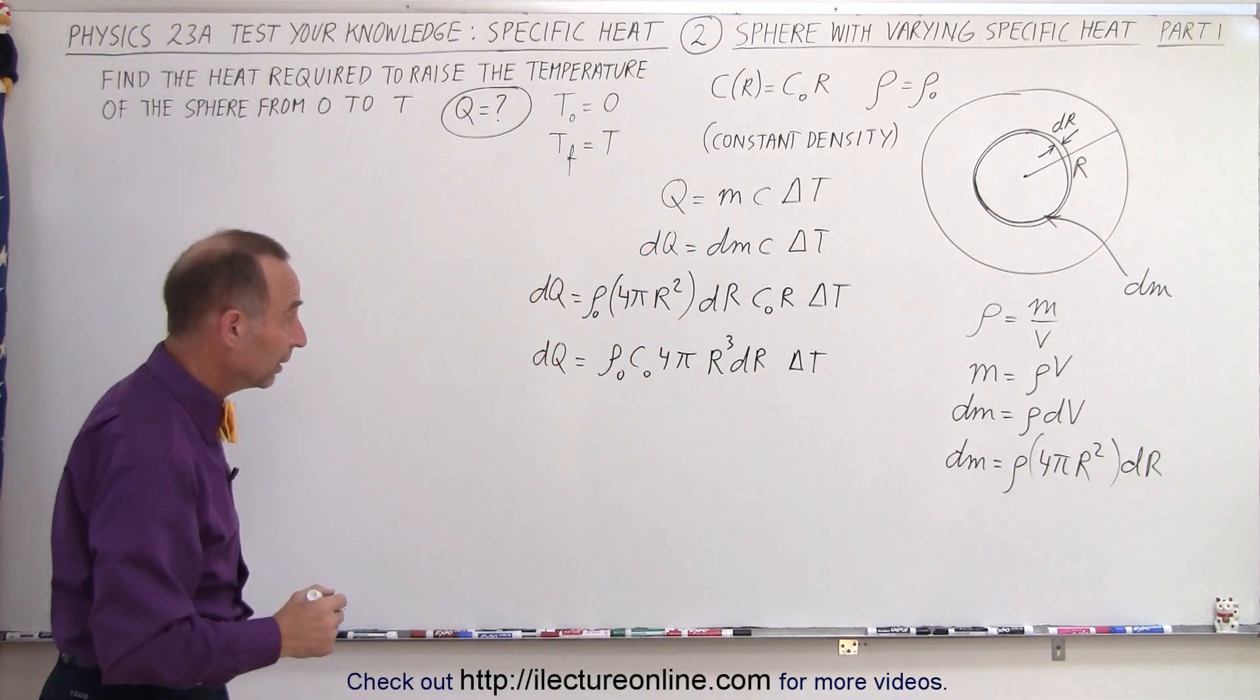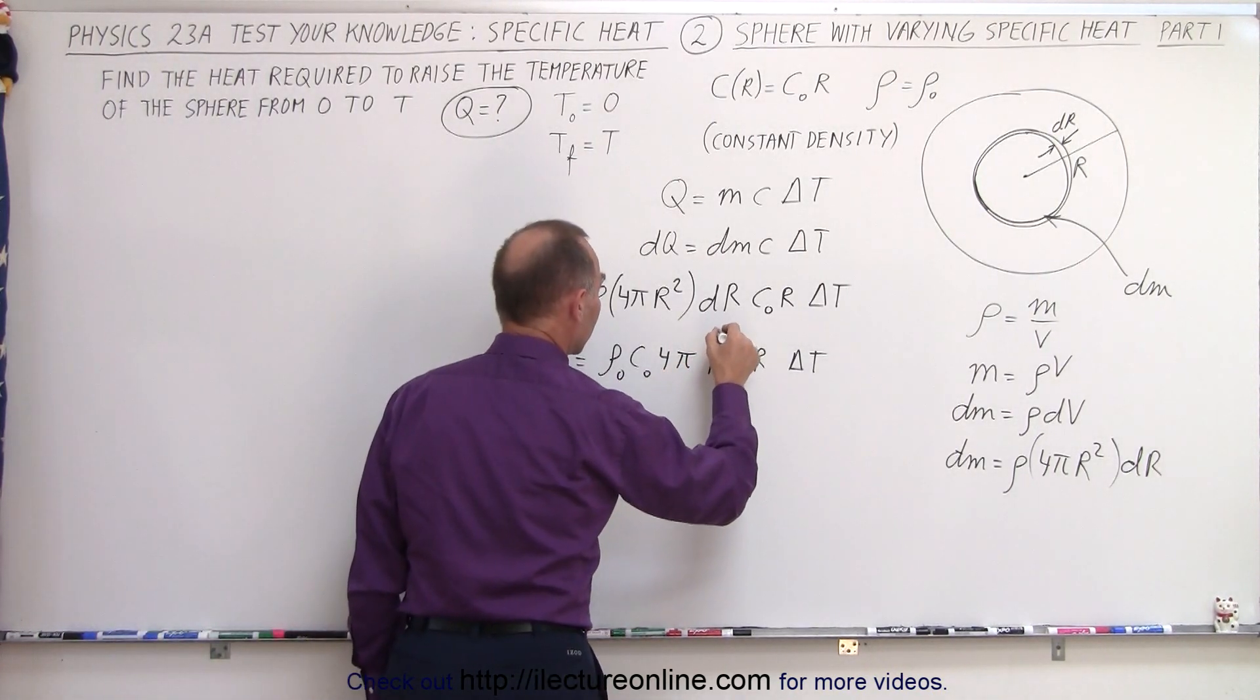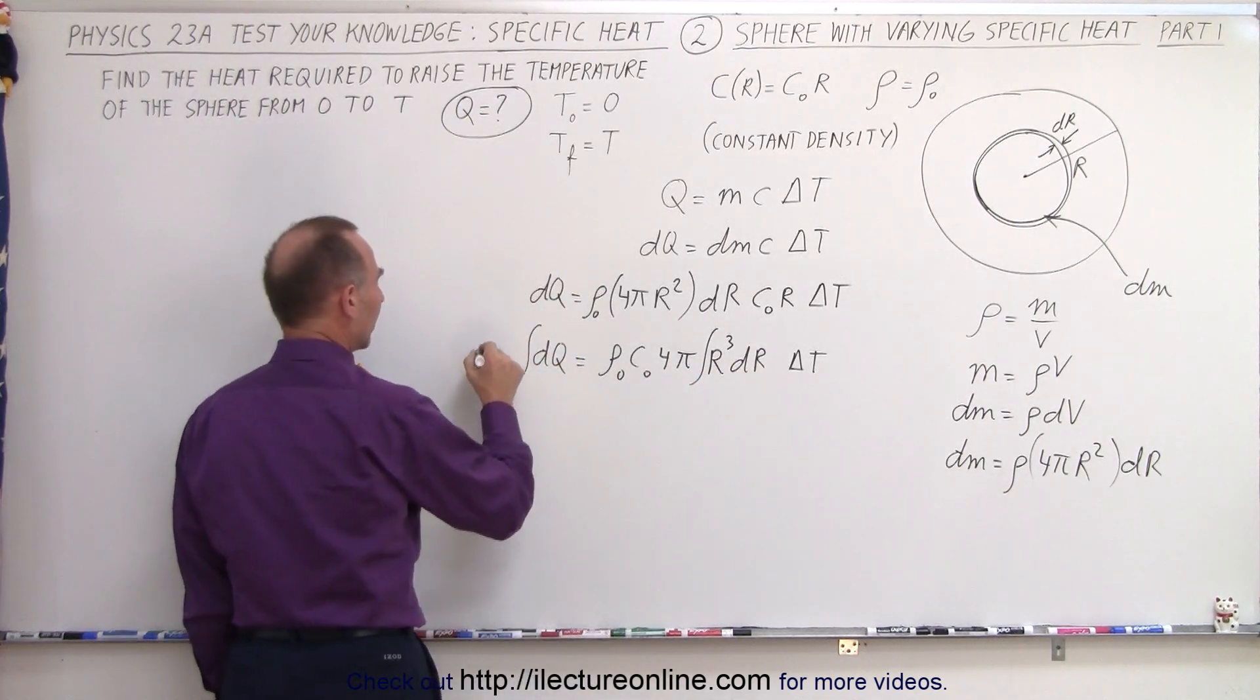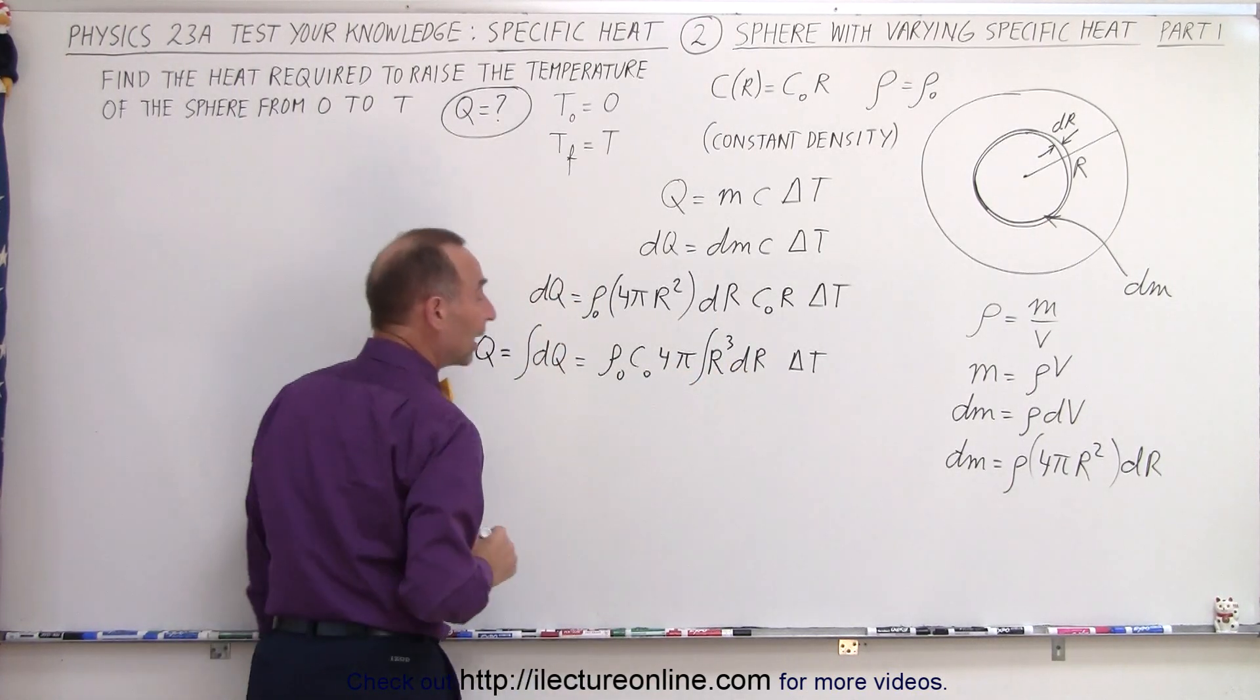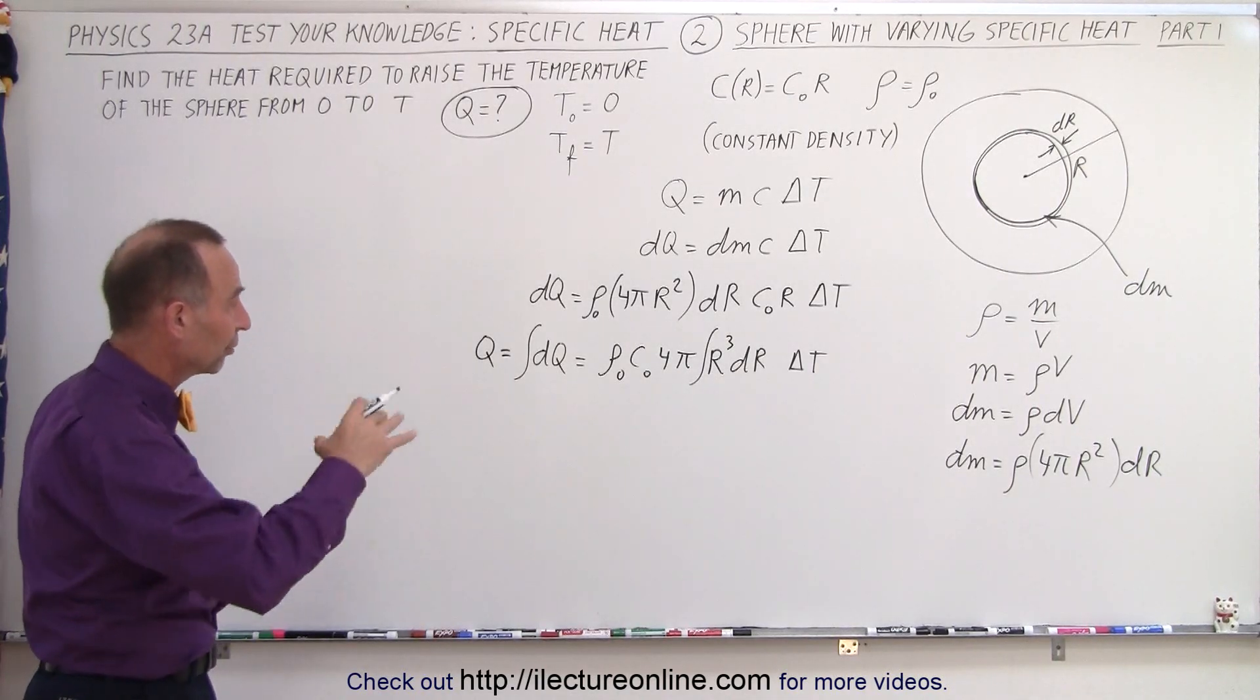And now what we can do is we can integrate both sides, we can integrate the dQ, and we can integrate this. Of course, the delta t being a constant, we can place it over here, and so all the dQ summed together will be the total heat required to raise the temperature from 0 to t.